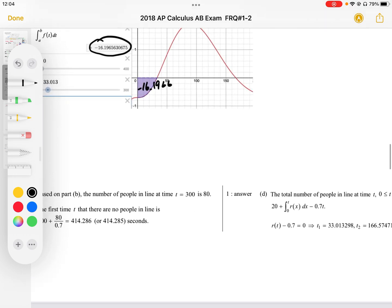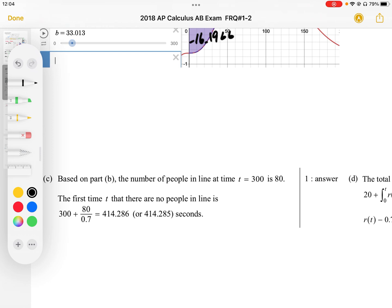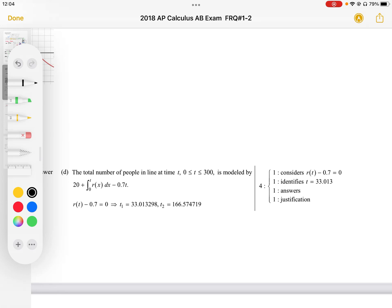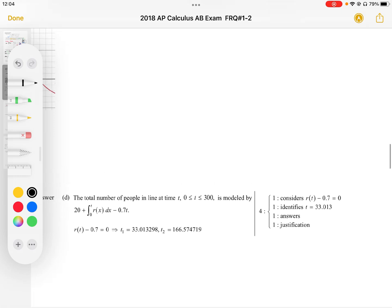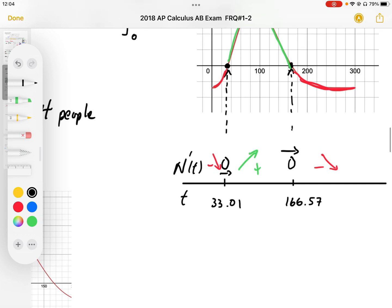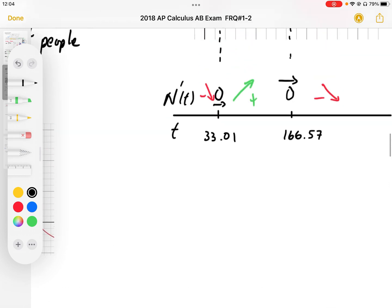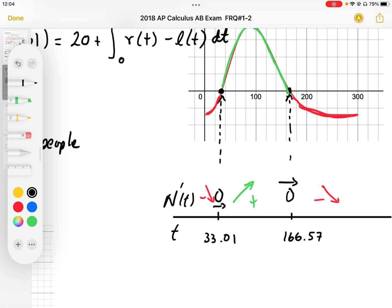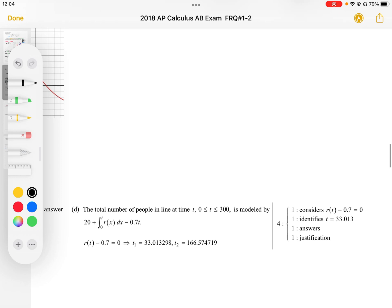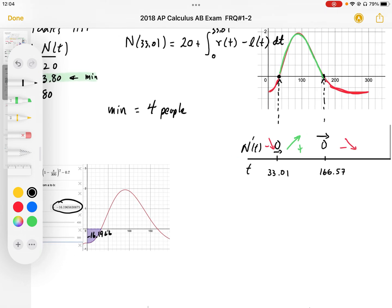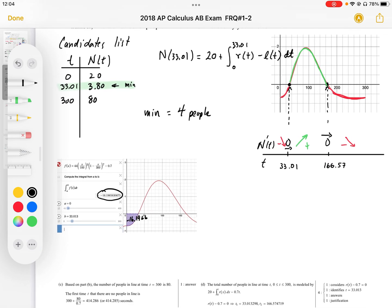Taking a look at our mark scheme, for c, we're just looking for that 414.3 seconds. That's the 1 mark for that answer. For part d, we need to consider that the derivative r minus the derivative l, or the rate in and the rate out, must be equal to 0. So that's how we get the 0s for the n prime. And then we identify that t value of 33.01. And we find that on our graphing calculator by solving for 0s. And then we find the answer by working out the number of people that have left from 0 to 33.01, and the final answer gives us our last mark.